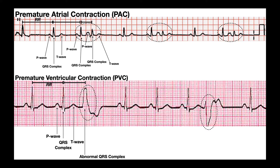A premature QRS complex will immediately follow that P wave. The next cycle has a P wave, QRS, and T — that one's normal. But then we get another premature P wave, followed by a small QRS. Notice that premature QRS complexes are shorter, lower in amplitude, and preceded by that premature P wave. We call this premature atrial contraction because there's a premature P wave — premature atrial depolarization, therefore a premature atrial contraction.